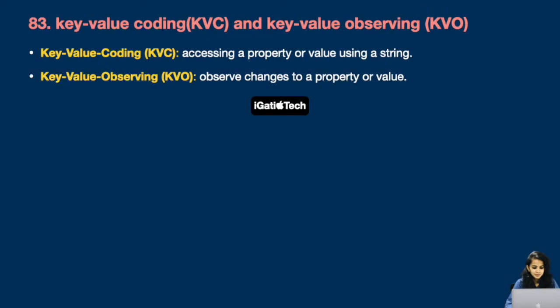Question number 83: Key-Value Coding and Key-Value Observing (KVC and KVO). Key-Value Coding means accessing a property or value using a string. Key-Value Observing means observing changes to a property or value.